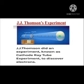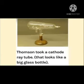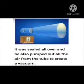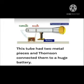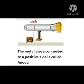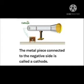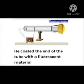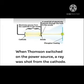Thomson took a cathode ray tube that looks like a big glass bottle. It was sealed all over, and he pumped out all the air from the tube to create a vacuum. This tube had two metal pieces, and Thomson connected them to a huge battery. The metal piece connected to the positive side is called the anode, and the metal piece connected to the negative side is called the cathode. He then coated the end of the tube with a fluorescent material.